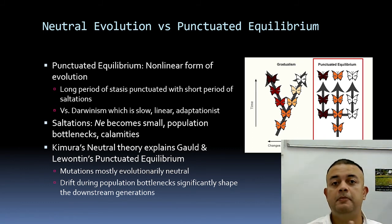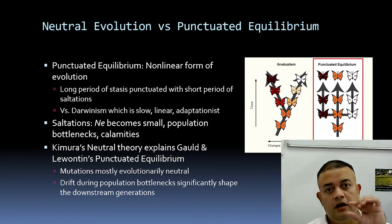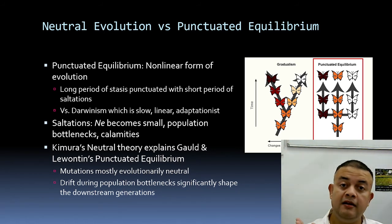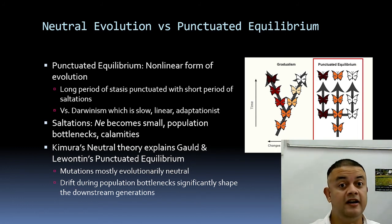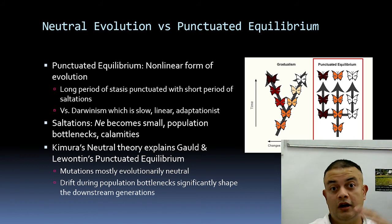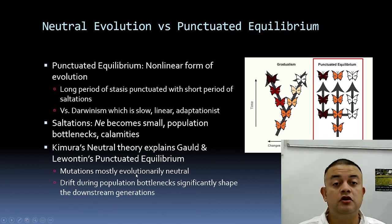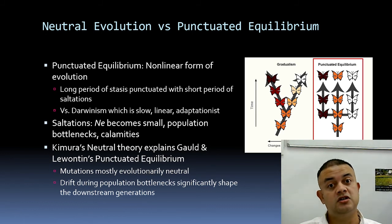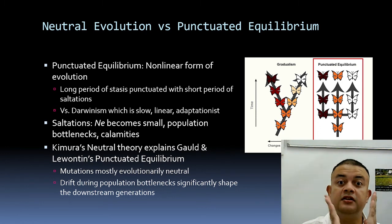In paleontology, for millions of years you see little phenotypical change, but in very narrow sediment bands you can see big changes — radiations with many different morphological variations — happening during extremely brief time intervals. This correlates with events like asteroid impacts when population bottlenecks occur. That is exactly what Kimura was saying: mutations are mostly evolutionarily neutral, and drift during population bottlenecks significantly shapes downstream generations.